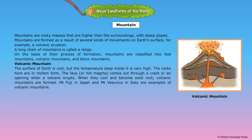Volcanic Mountain. The surface of Earth is cool, but the temperature deep inside it is very high. The rocks here are in molten form. The lava, a hot magma, comes out through a crack or an opening when a volcano erupts. When they cool and become solid rock, volcanic mountains are formed.